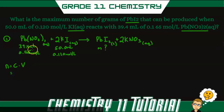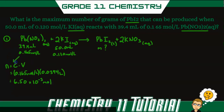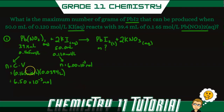I'll calculate moles for both reactants. For lead nitrate, I convert milliliters to liters: 0.165 mol/L × 0.0394 L = 6.50 × 10⁻³ moles. For potassium iodide: I get 6.00 × 10⁻³ moles.